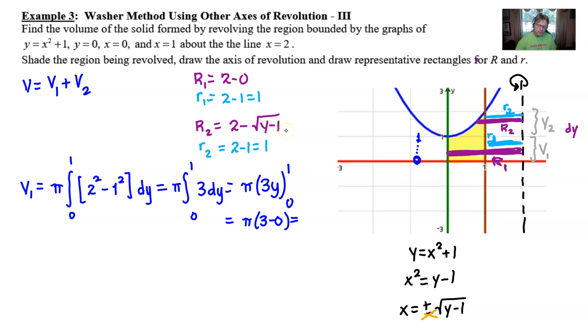And then by the time we plug in our boundaries from 1 to 0, we would get 3 minus 0, and that of course gives us a final volume of 3 times π in that case.